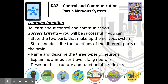Our learning intention today is to learn about control and communication, in particular the nervous system. By the end of this lesson, you should be able to state the two parts that make up the nervous system, state and describe the functions of the different parts of the brain, name and describe the three types of neuron, explain how impulses travel along neurons, and describe the structure and function of a reflex arc.